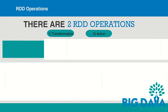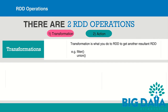There are two operations that can be applied on an RDD. One is transformation. Transformation is what you do to an RDD to get another resultant RDD. Examples would be applying functions like filter and union, which create another resultant RDD.